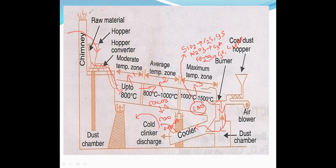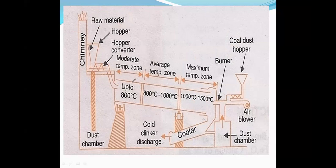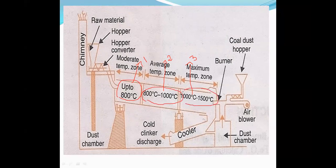Portland cement is a combination of dicalcium silicate, tricalcium silicate, tricalcium aluminate, tricalcium ferrate or tetra calcium alumino ferrate, and gypsum. Gypsum is added to increase the lifetime of Portland cement. In the three zone heating process: zone one is the drying zone, zone two is the calcination zone, and zone three is the clinkering zone where calcium oxide combines with other ingredients.